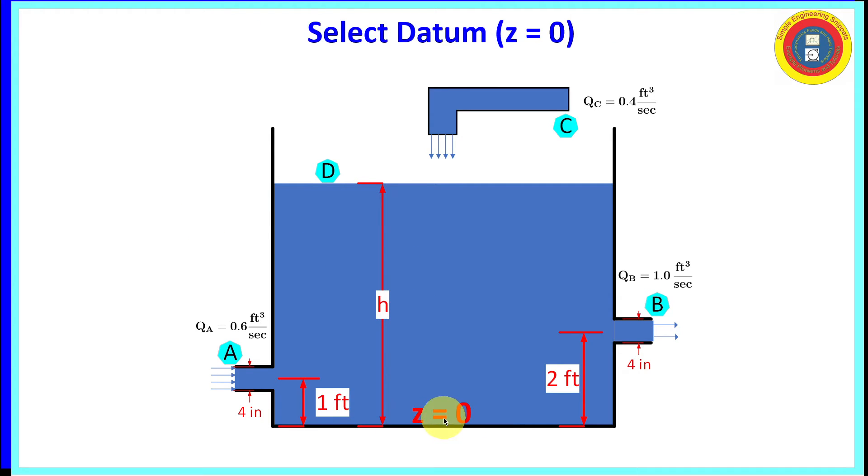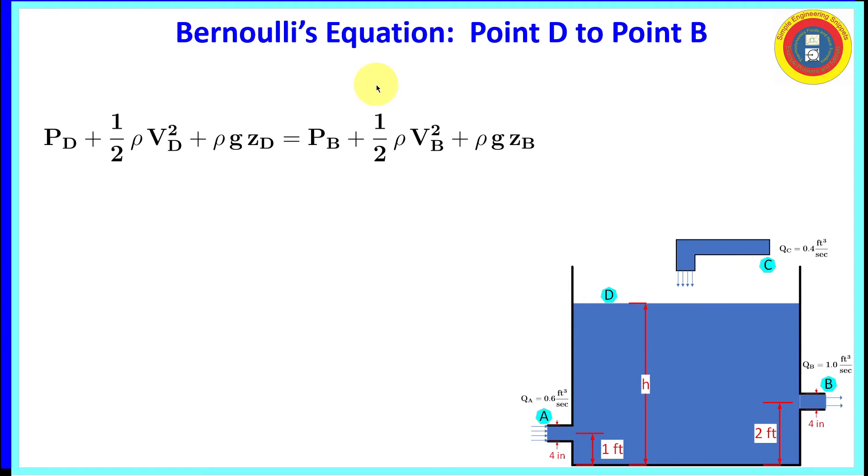Let's select the datum, or z equals zero, at the bottom of the tank. And let's work on Bernoulli's equation. Applying it from point delta, the free surface, to our outlet at Bravo.